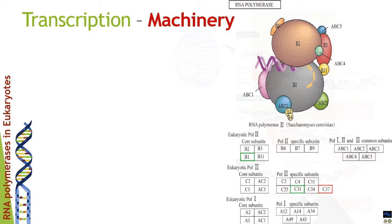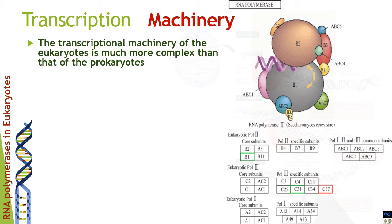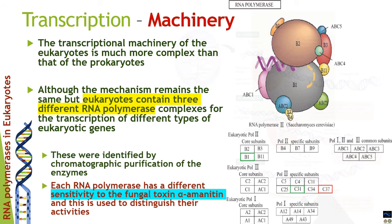In eukaryotes, the transcriptional machinery is much more complex than in prokaryotes. It is divided among three different types of RNA polymerases, each coded by different genes and with different subunit compositions. They were initially identified by chromatographic purification and characterized by their sensitivity to the fungal toxin alpha-amanitin, which is used to categorize the different polymerases.